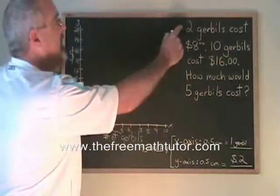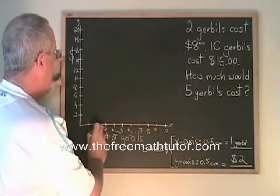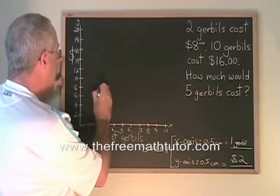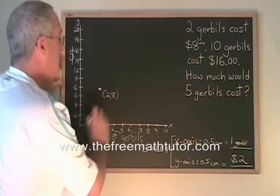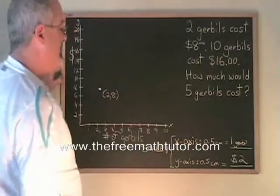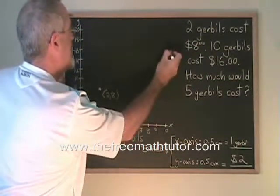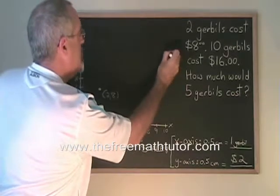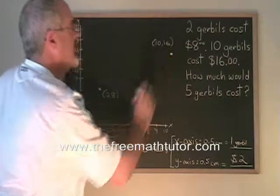Now let's graph our points. We know 2 gerbils cost 8 dollars. So I find 2 on the x-axis, 8 on the y-axis. And I put that dot and identify it. We know 10 gerbils cost 16 dollars. 10 on the x-axis, 16 on the y-axis. We put a dot. I identify that point.